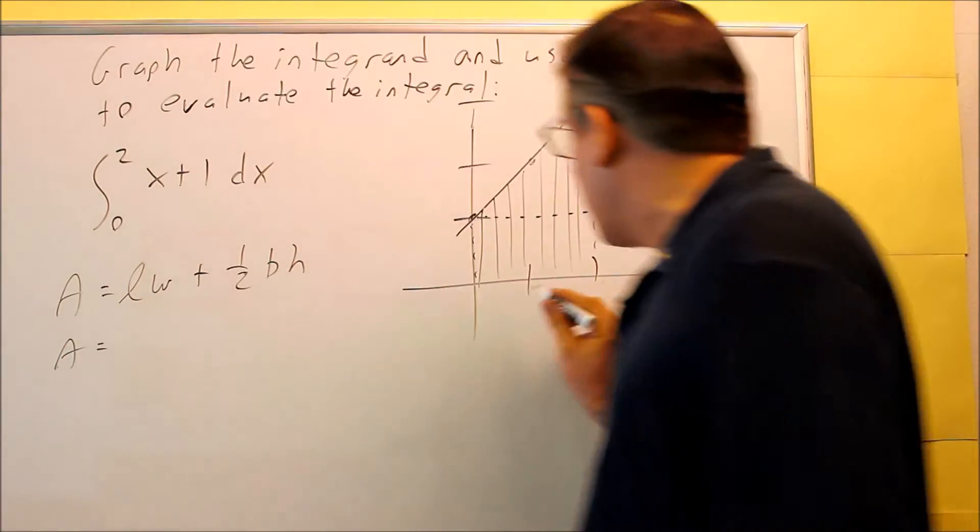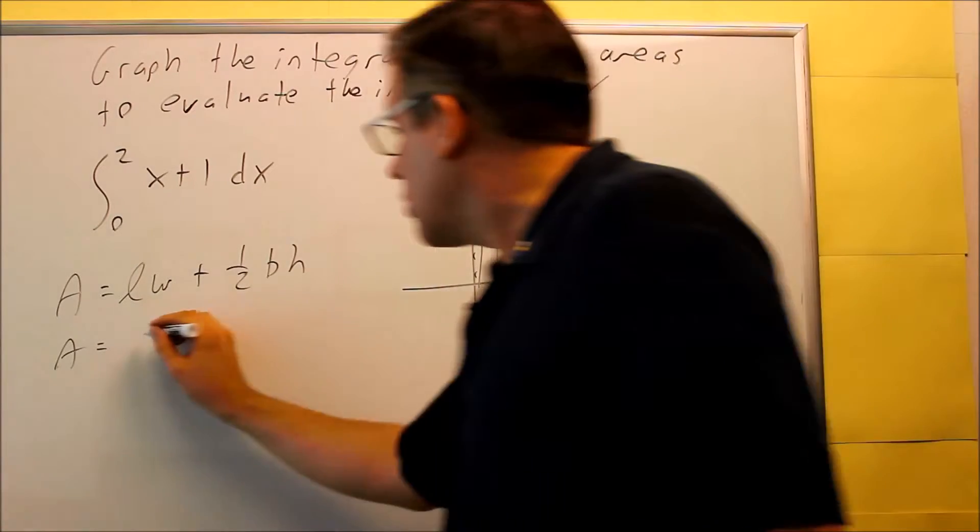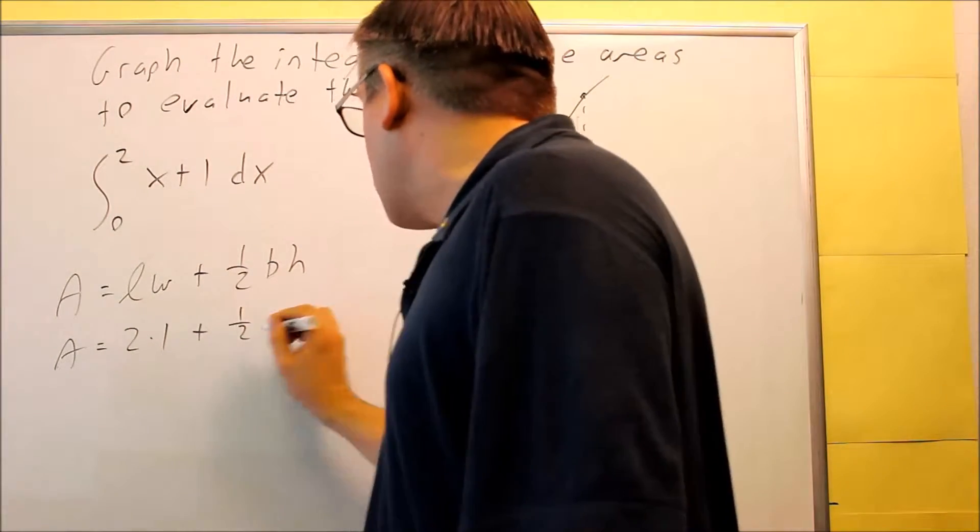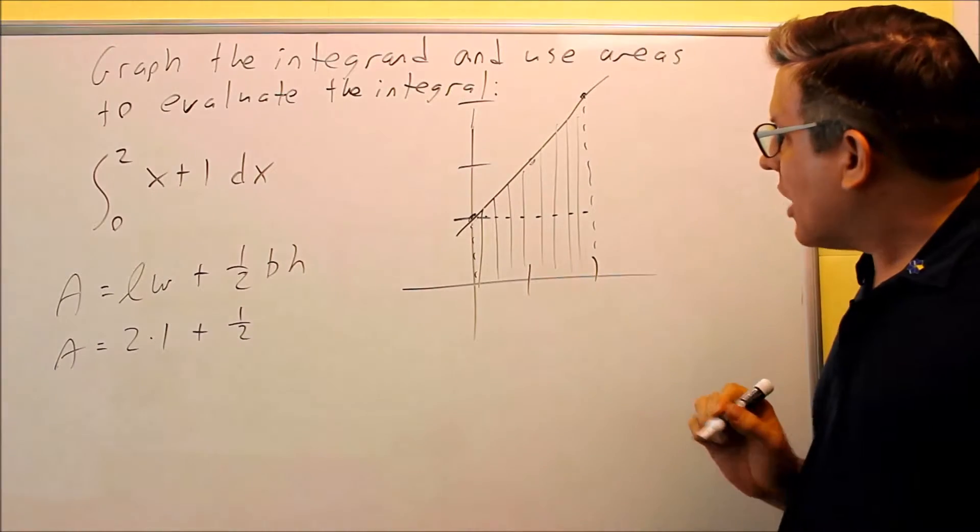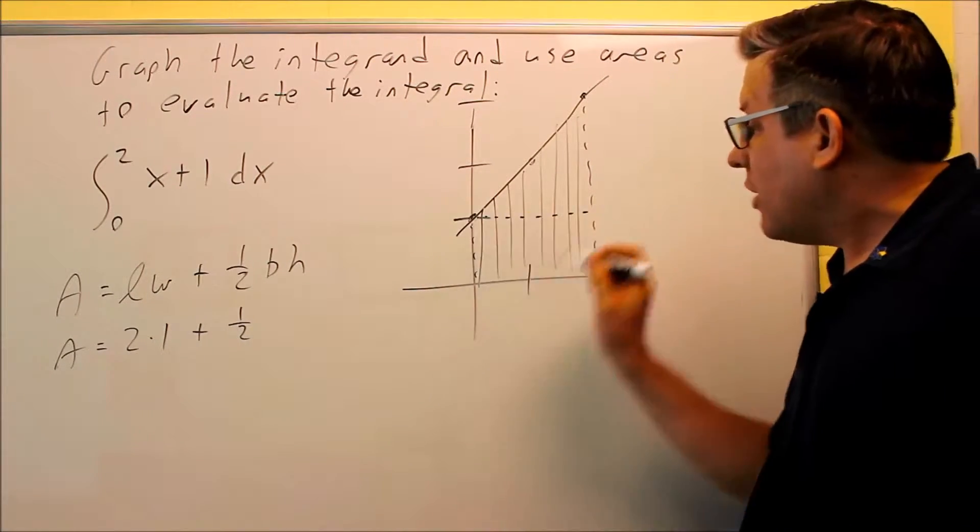Okay, so first we'll do the rectangle part. The length is 2, the width is 1, so we're going to do 2 times 1. And then for the triangle part, I have 1/2 base times the height. Now the base is going to be this right here, this dotted line, that's a base of 2.